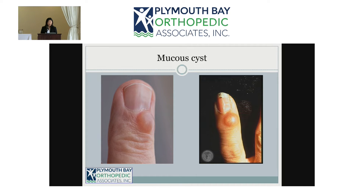Also found on the dorsal distal digit are mucus cysts, which are actually ganglion cysts associated with arthritis in that joint. As you can see on these fingers, there is a depression in the nail distally, and that's because the location of the cyst puts pressure where the nail is growing through.